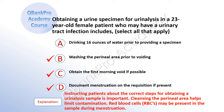The correct answer is B: washing the perineal area prior to voiding. C: obtain the first morning void if possible. And D: document menstruation on the requisition if present. Explanation: Instructing patients about the correct steps for obtaining a urinalysis sample is important. Cleansing the perineal area helps limit contamination. Red blood cells (RBCs) may be present in a sample during menstruation.